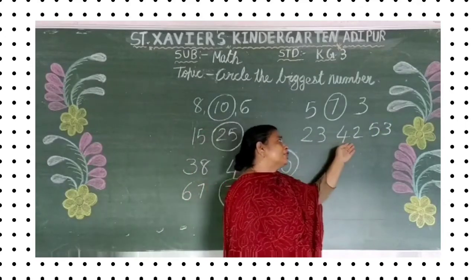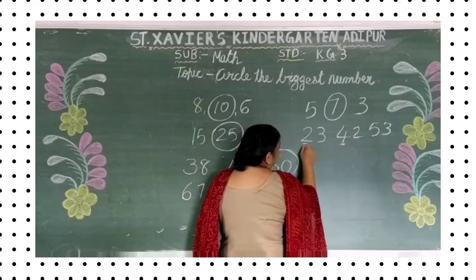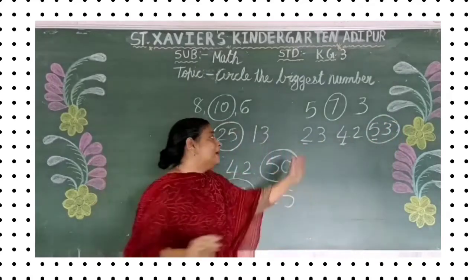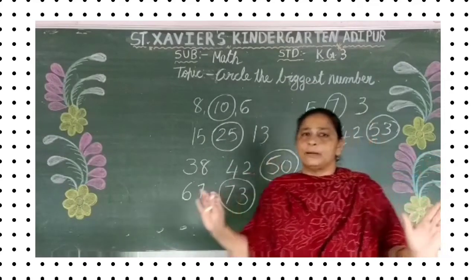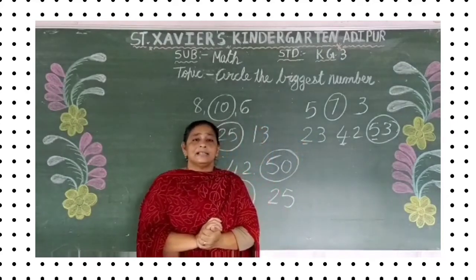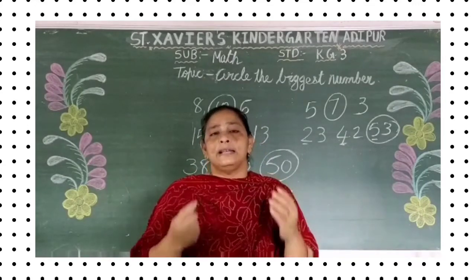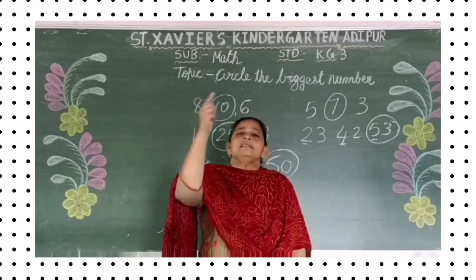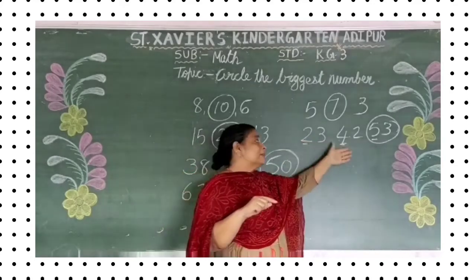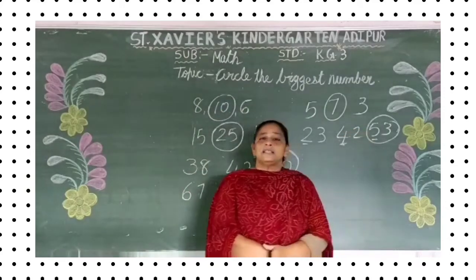Twenty-three, forty-two, fifty-three. Toh kohansa bada hai? Toh yeh waala size dhekhne ka aapko — two se bada four, four se bada five. Toh fifty-three is the biggest. Sab se bada. Teen numbers diya tha, teen mein se sab se bada number kaunsa hai — us peh aapko circle karna hai.